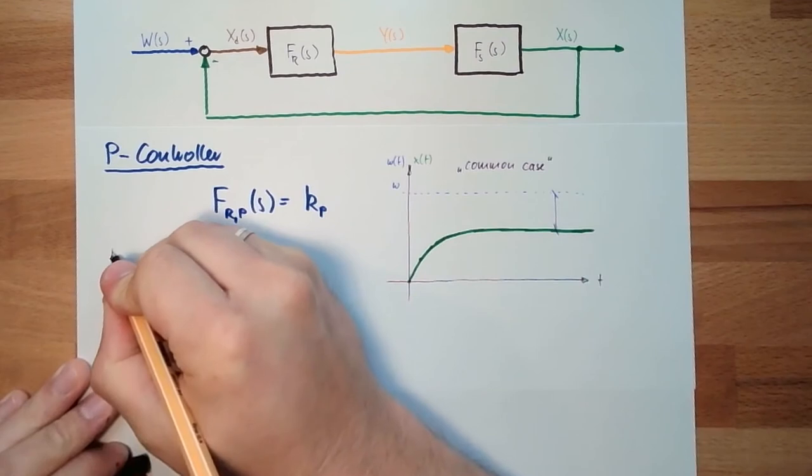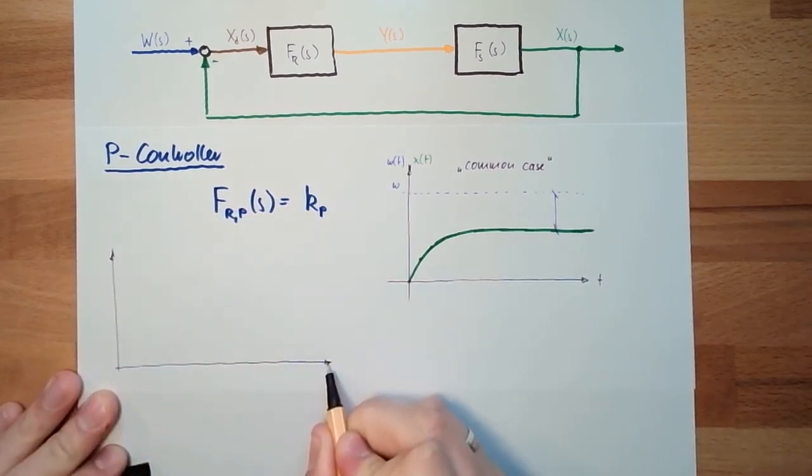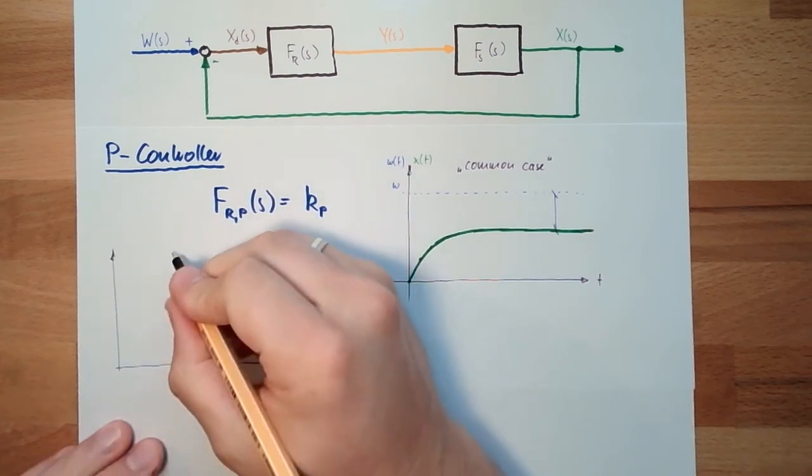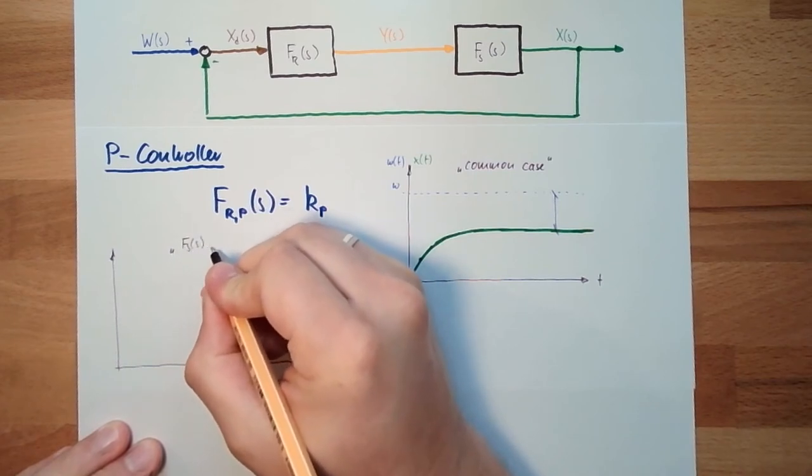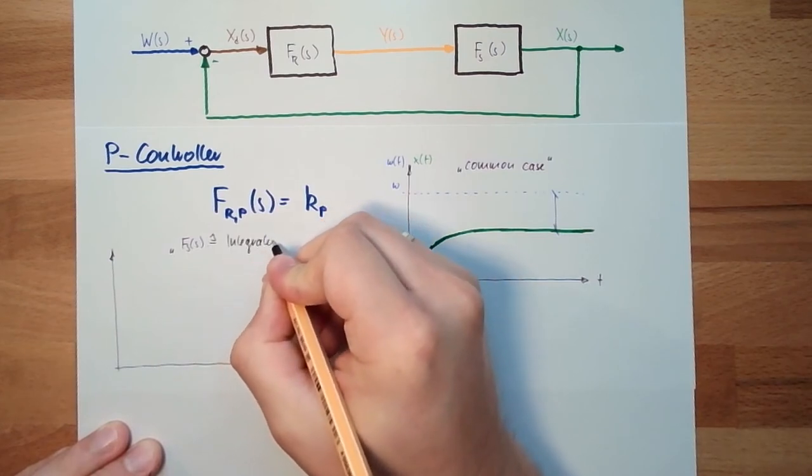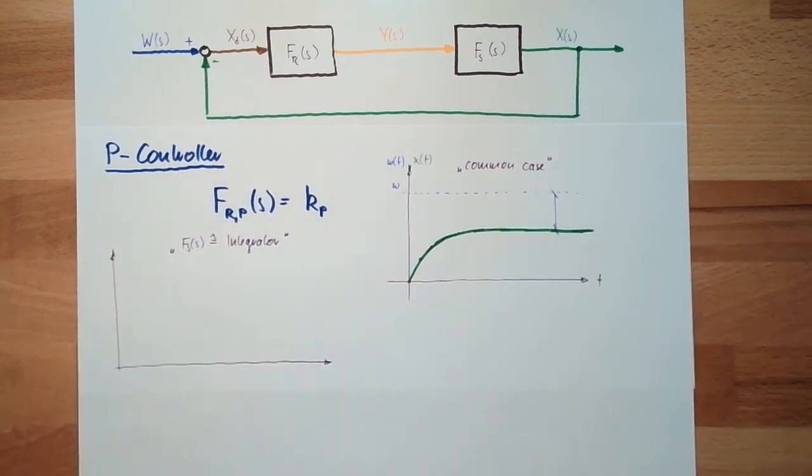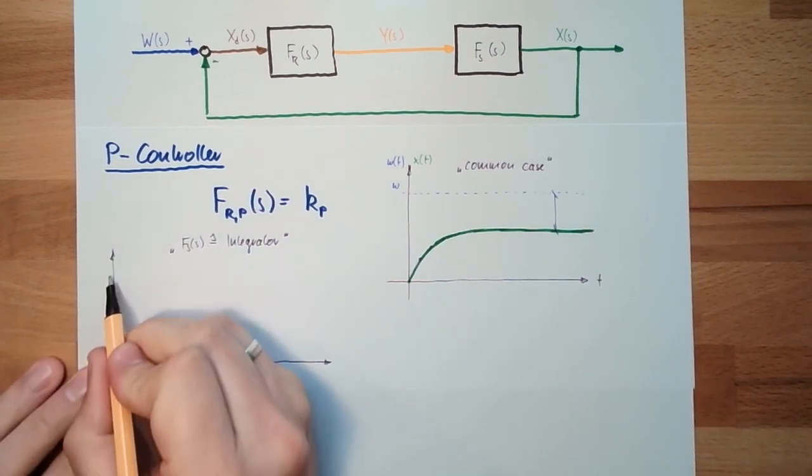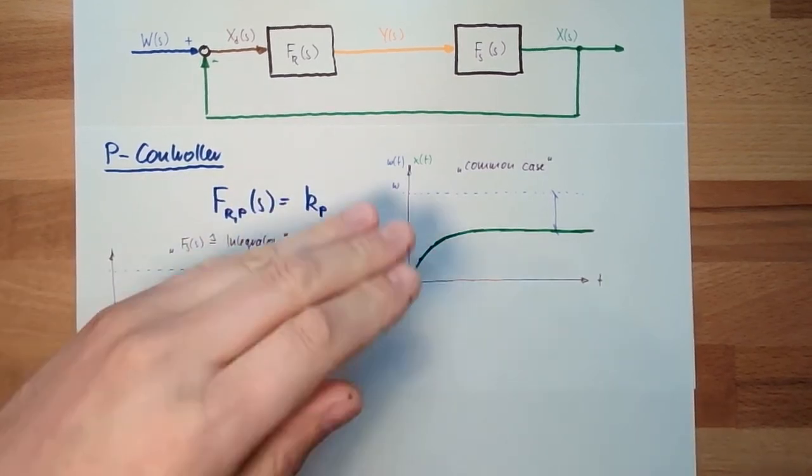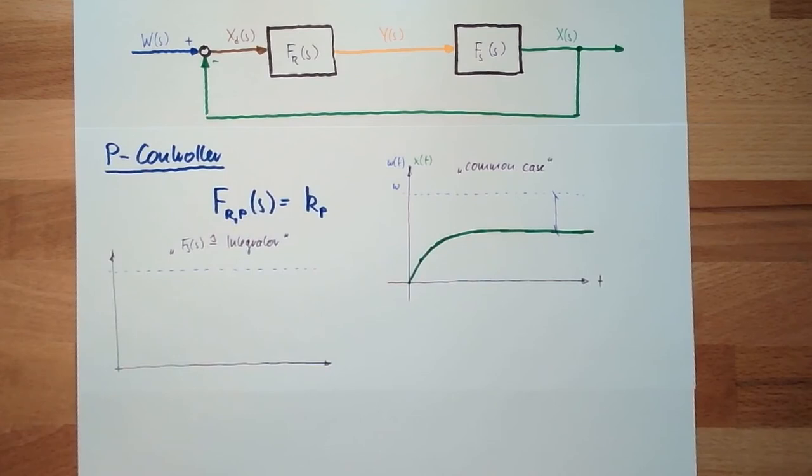And here we make another example. And here we write FS from S means an integrator. Let's think about a bucket. We want to fill the bucket to a certain level. This is the bucket level. And the controller is controlling a valve which lets water flow in. How will this behave? This is the wanted behavior.